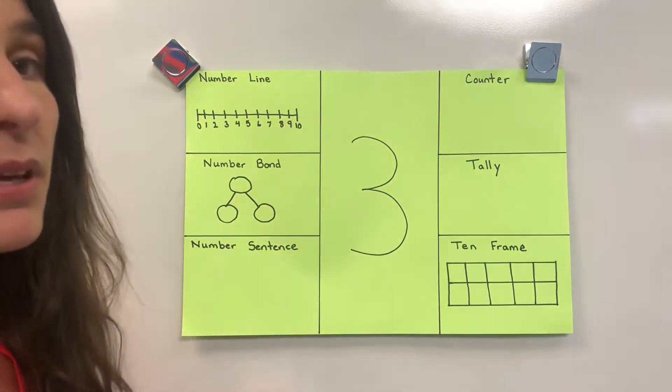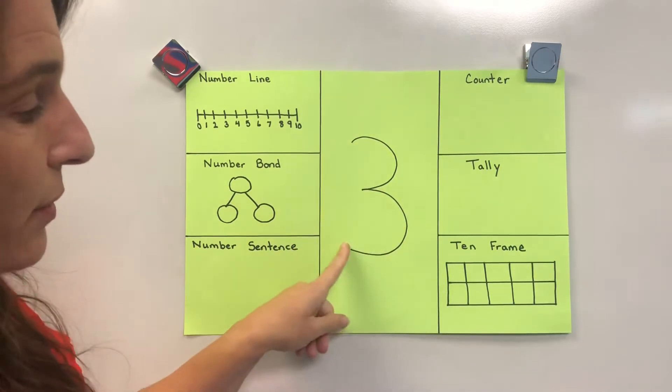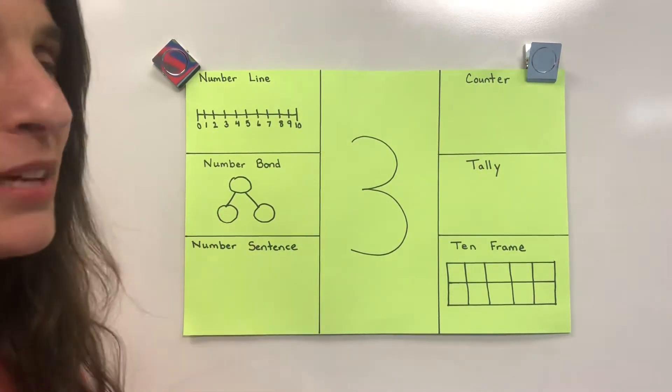Now to make a number three, you start at the top, you go around a tree, around a tree. That's how you make the number three. There's a little poem to help you remember.